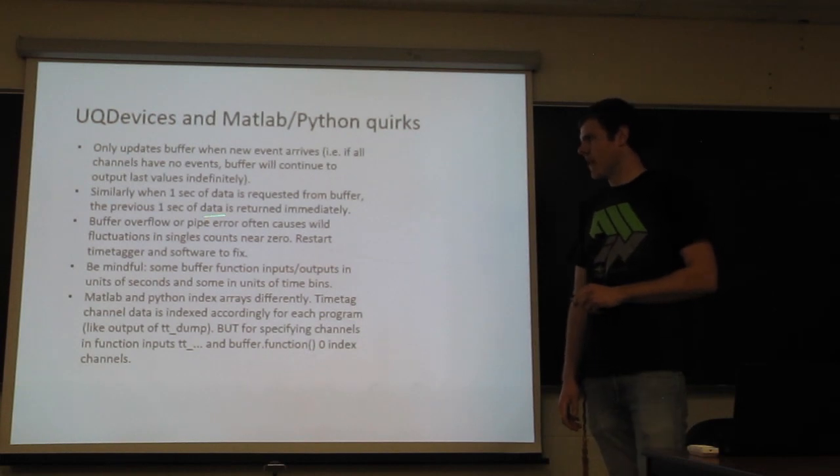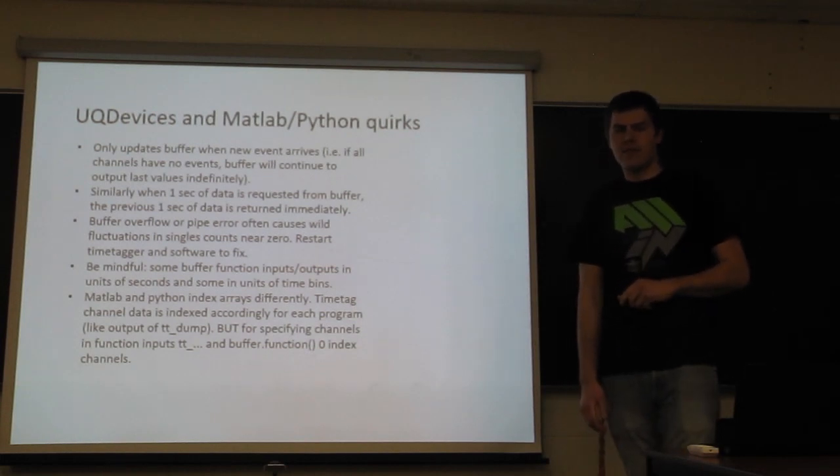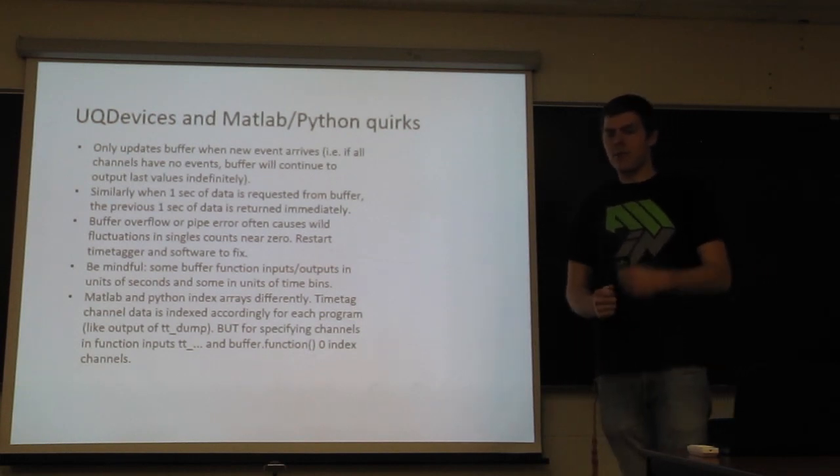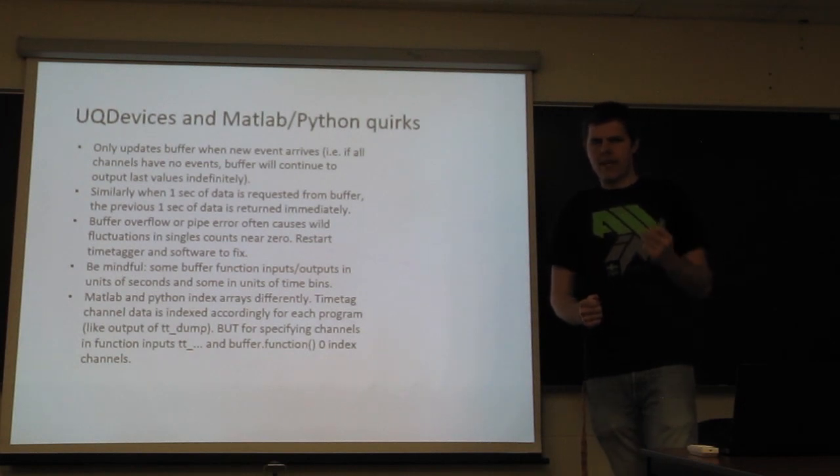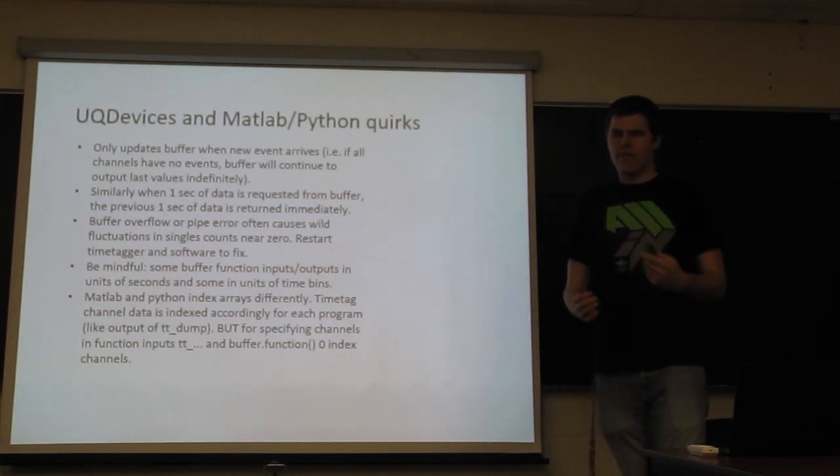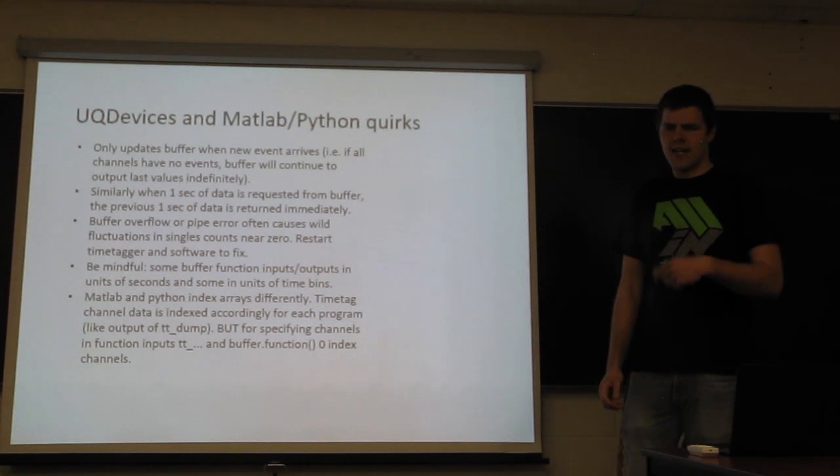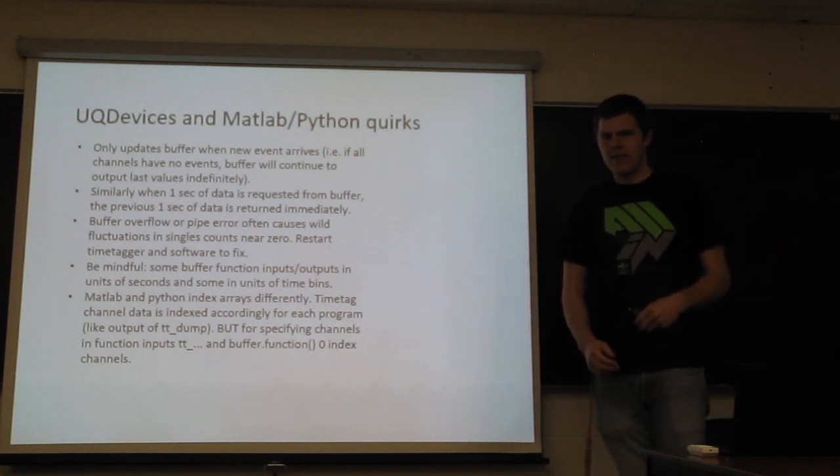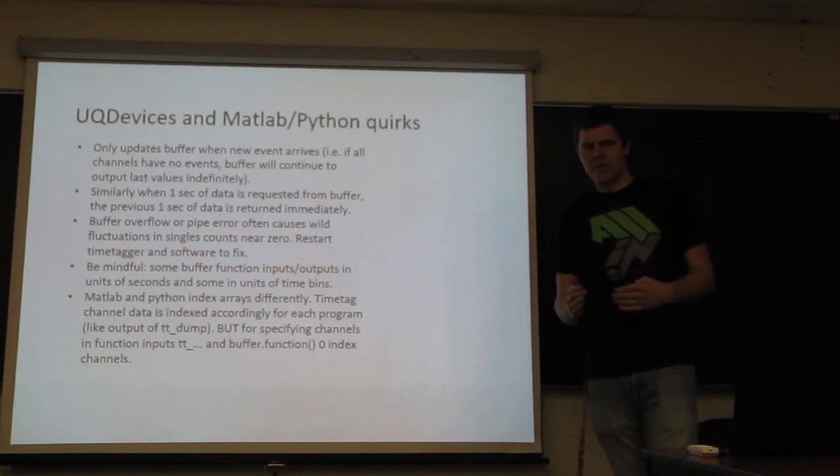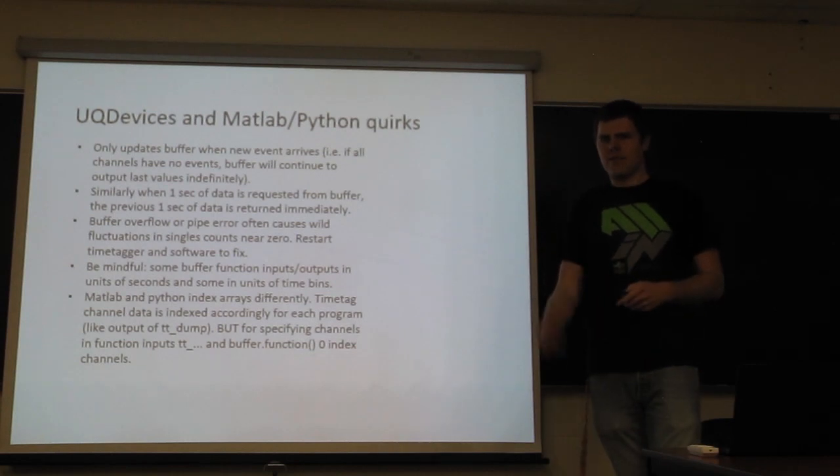So additionally, when you ask for one second of singles counts, it always gives you the previous one second. And then we'll do that immediately. So if you want to count for one second in your automated data taking, you need to have your code wait for one second after you've changed something and then ask for the singles.